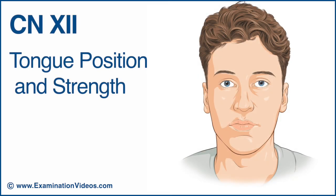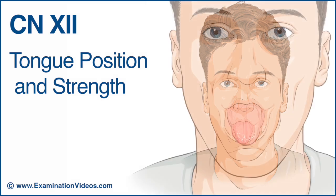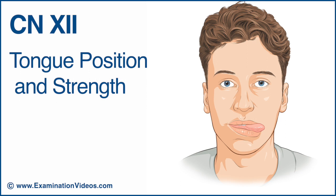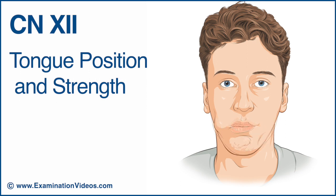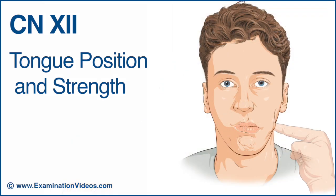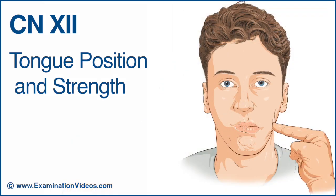To test cranial nerve 12, assess tongue position and strength. Ask the patient to stick out their tongue and observe for any deviation or fasciculation. Ask them to move the tongue from side to side and compare the range and symmetry of the movement. Now ask the patient to press their tongue against their right cheek and resist while you apply pressure. Repeat on the opposite side and compare the strength of resistance on each side.